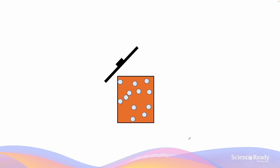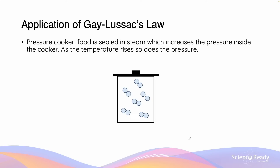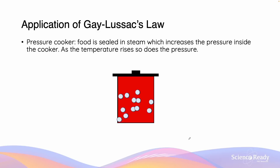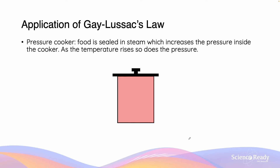We can use this understanding of Gay-Lussac's law to consider day-to-day applications. A pressure cooker, for example, is an example of Gay-Lussac's law in practice. Food is sealed inside a metal pot which has a secured lid. As the temperature inside the pot increases, the particles begin to move more vigorously, and the internal pressure of the pot increases proportionally. To release this pressure, a regulator is pulled and the internal particles escape the pot. Note that temperature does not immediately drop proportionally to the decrease in pressure, because volume and amount are no longer held constant, so Gay-Lussac's law no longer holds true once the regulator has been pulled.